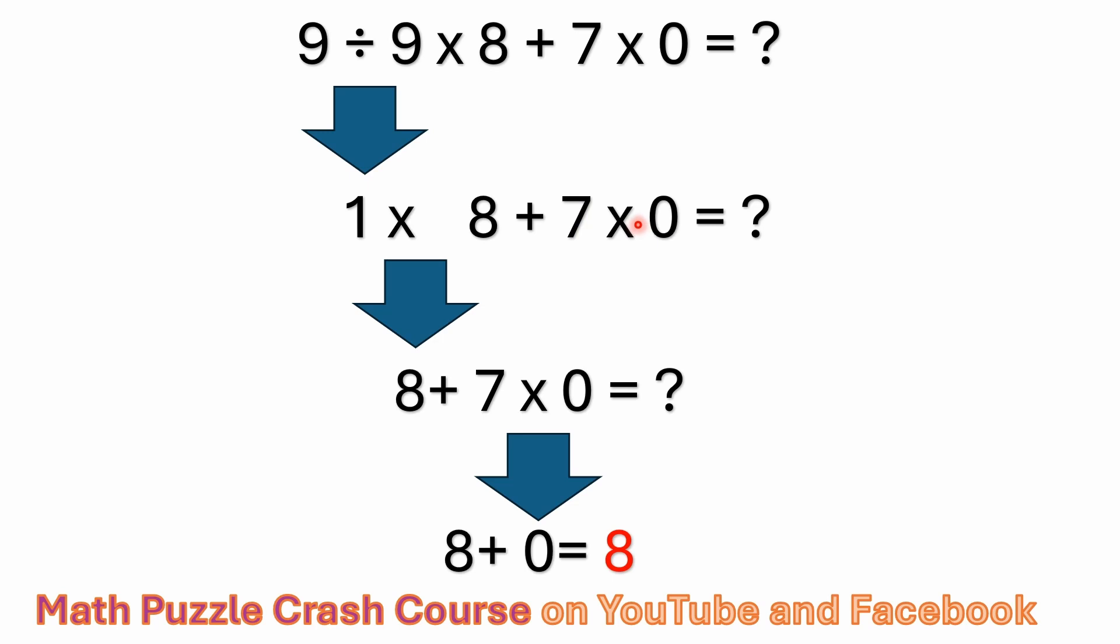And this is where a lot of people are getting confused. And I'm going to cover that when I talk about the two common wrong answers to this problem. Alright. So we did the one times eight. The other multiplication is seven times zero. Well, what is seven times zero? Seven times zero is zero, right? Zero. One times eight is eight. So eight plus seven times zero is eight plus zero equals eight.